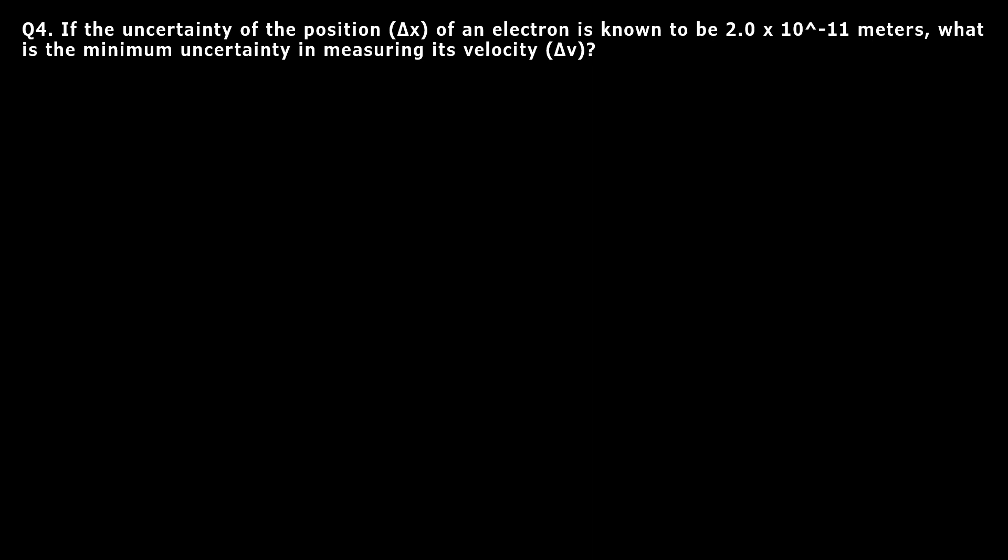Question four: If the uncertainty of the position of an electron is known to be 2 times 10 to the negative 11 meters, what is the minimum uncertainty in measuring its velocity? Since velocity (v) is related to momentum (p) by the equation p equals m times v, where m is mass...